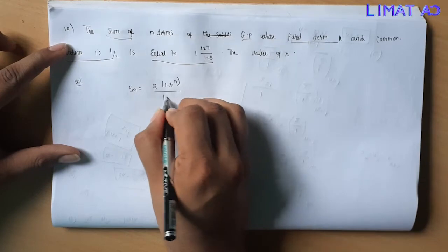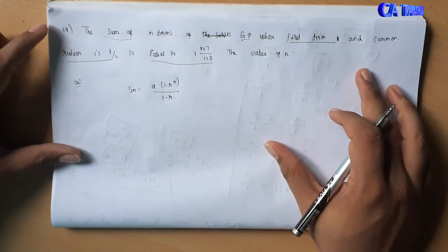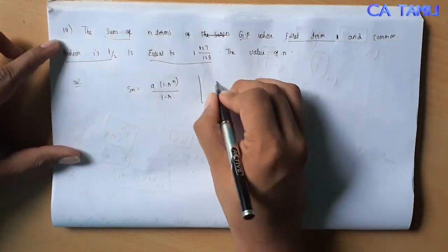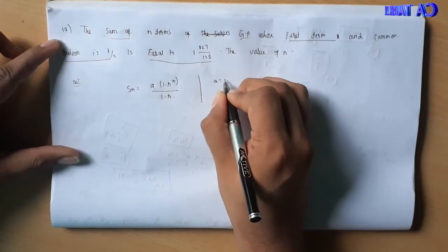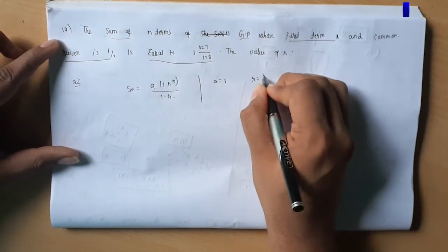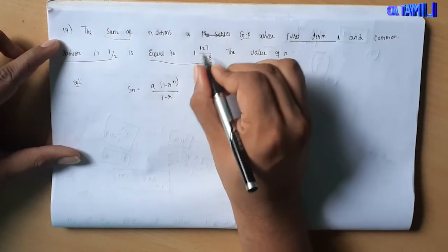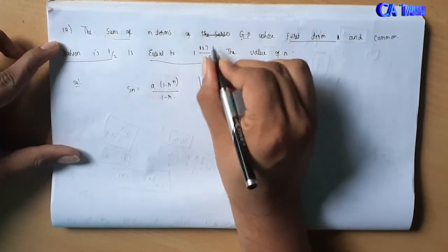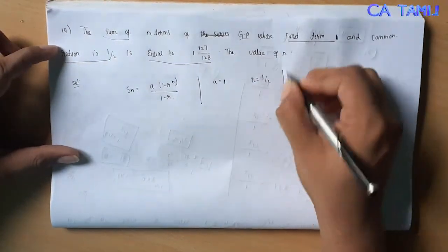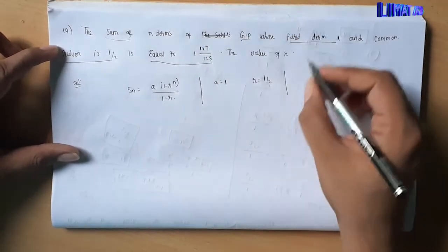The sum Sn is given as 1 and 127/128 as a mixed fraction, which equals 1 into 127 divided by 128. We set this equal to the sum formula Sn.